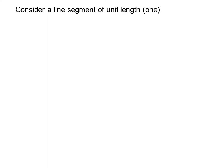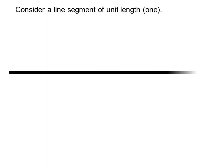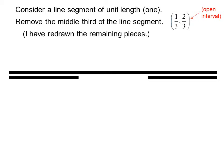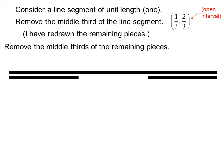Consider a line segment of unit length 1, represented by this bar here. Remove the middle third of the line segment — that is, we will remove the part on the open interval between 1 third and 2 thirds. I have redrawn the remaining pieces. Remove the middle thirds of the remaining pieces, that is, on the intervals from 1 ninth to 2 ninths and 7 ninths to 8 ninths.